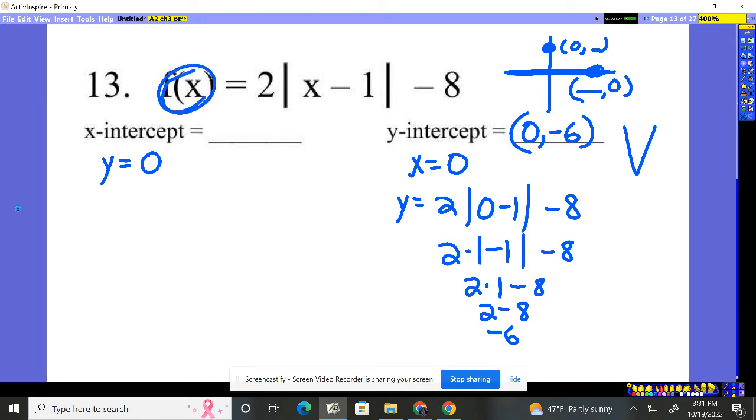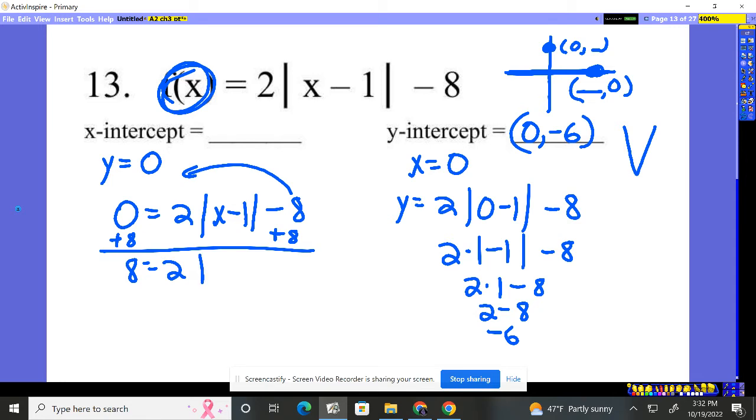I have to set this piece equal to zero. So I have zero is equal to 2 times the absolute value of x minus 1, take away 8. I got to get the absolute value by itself. So I'm going to move the minus 8 over to the other side by adding 8 to both sides of this equation. 8 is equal to 2 times the absolute value of x minus 1. How do I get rid of that multiplying by 2? I'm going to divide by 2.